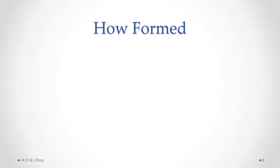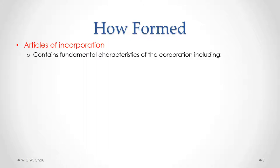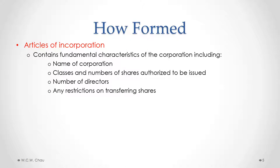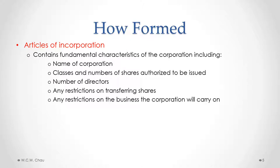One of the documents that needs to be filed to form a corporation is the Articles of Incorporation. The articles are usually prepared by a corporate lawyer and would contain the fundamental characteristics of the corporation, which would include the name of the corporation, the different classes and numbers of shares authorized to be issued, the number of directors on the board of directors, any restrictions on the transfer of ownership of shares, and any restrictions on the business the corporation is allowed to carry on.